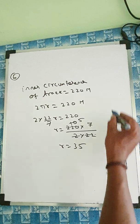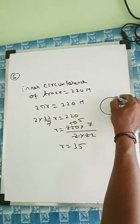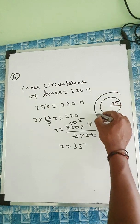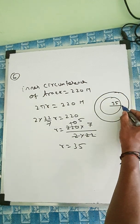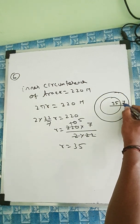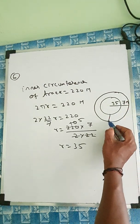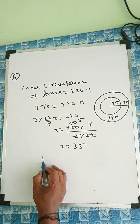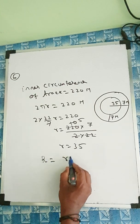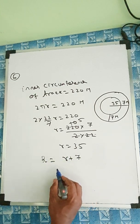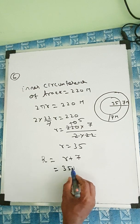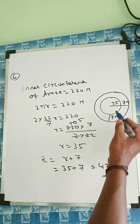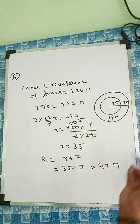I will just show you here. This inner one is we got 35. And outer, what's given here? This one is 7 meter wide everywhere. Everywhere is 7 meter. That means capital R we can make it small r plus 7. 35 plus 7, it will be 42 meter. Because this is 35, this is plus 7, so it will be 42 meter.